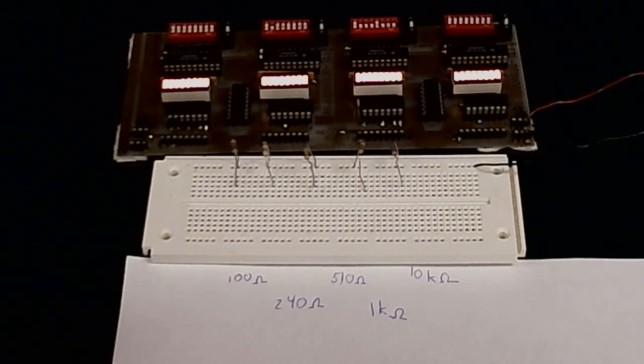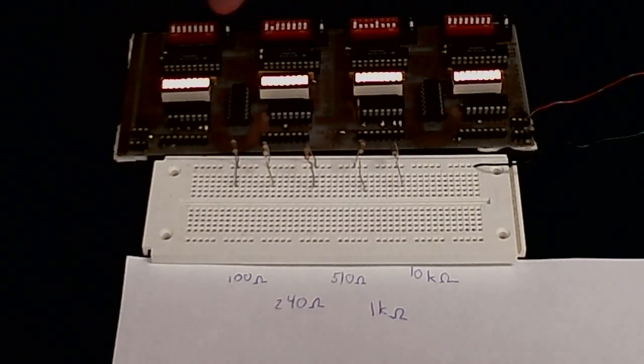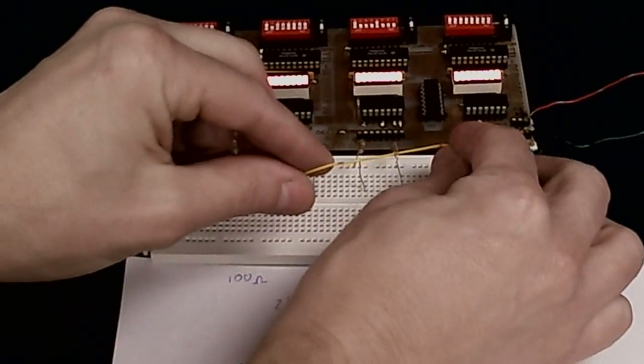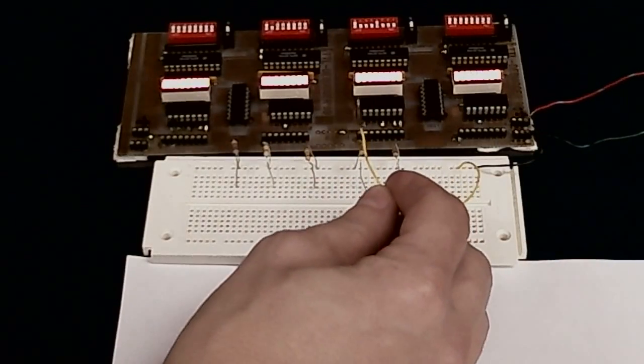Here I'm going to show you how to choose pull down resistors for switches. Here we have a debugger board with several banks. This is set in display mode because it's displaying what comes in on each of these pins.